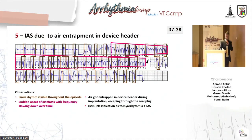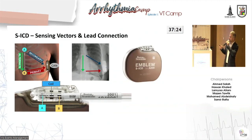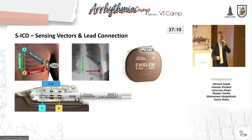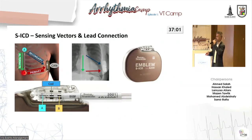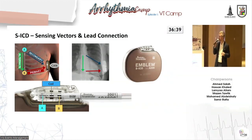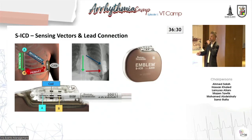The S-ICD is implanted on the left side of the chest with one electrode tunneled along the mid-sternal line. The S-ICD can sense along three vectors: primary — between the proximal sensing electrode and the can; secondary — between the distal tip of the electrode and the can; and alternate — between the two sensing points on the electrode. The proximal sensing ring is called the Sense B node — this will be important for the next case.